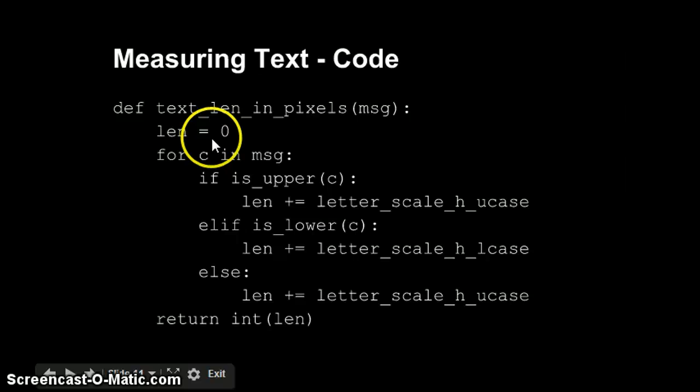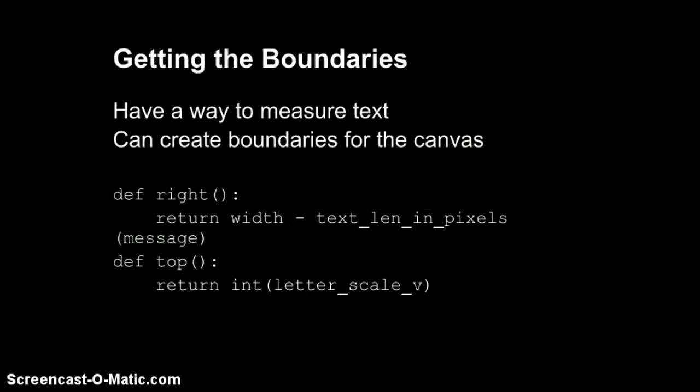It takes a message, starts off a length value at zero, and then it loops through all the characters in message. If a character is uppercase, we're going to increase length by the scale, the horizontal scale for an uppercase character. And if C is lowercase, we're going to scale it by the lowercase value. For any other characters that are neither, we'll just use the uppercase scale. We'll do that for all the characters, and the length value will be the sum of all those cases, and we'll just return the int version of that value. And that's really it.